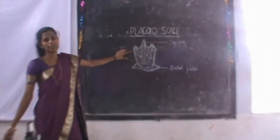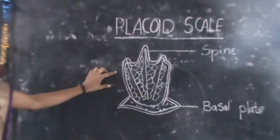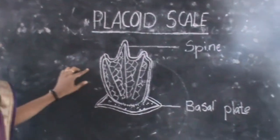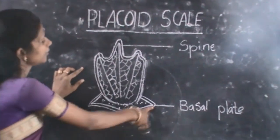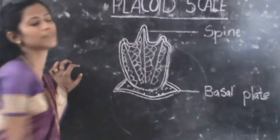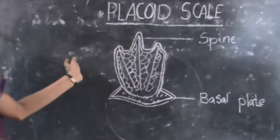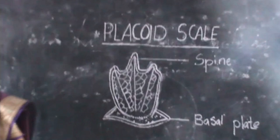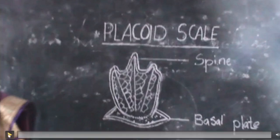We can see the placoid scale clearly - this is the basal plate and this is the spine. That concludes today's practical. Thank you.